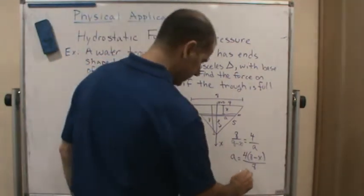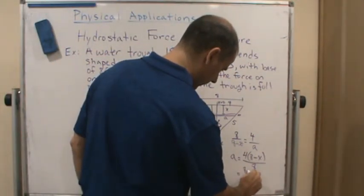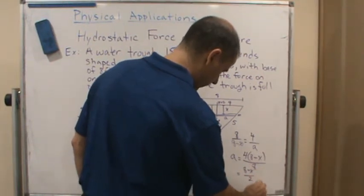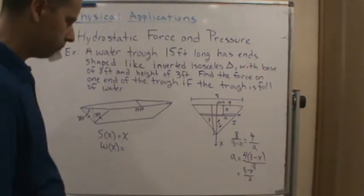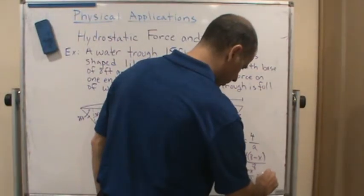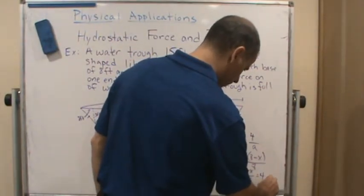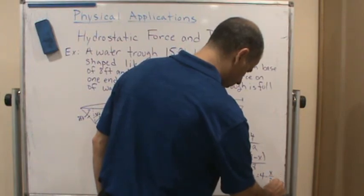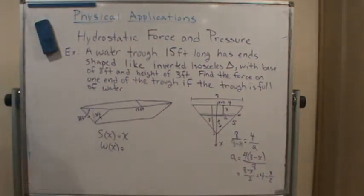Which means that this is going to equal 8 minus x over 2, which is going to equal 4 minus x over 2.